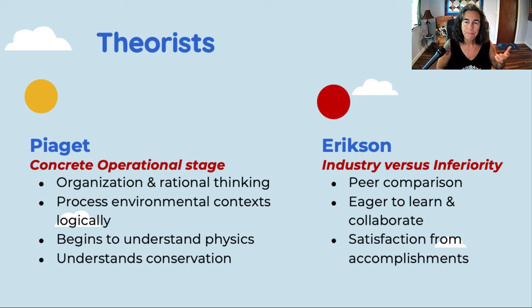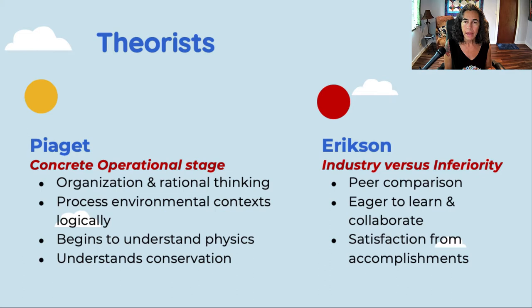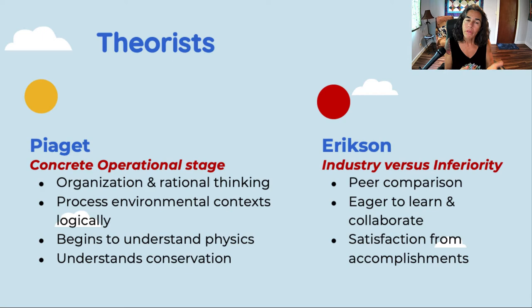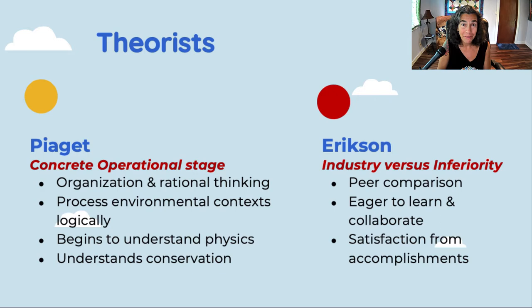Erikson, whom we've visited throughout the lifespan, terms this stage of development industry versus inferiority. Children in this age either decide they can be engaged in occupation and activity in a meaningful and helpful way, or they suffer from feeling inferior to their peers. There's a lot of peer comparison, and this is the age that starts — continuing into adolescence. It's the earliest stage peer comparison typically begins, sometimes in later preschool, but it definitely comes to the fore in middle childhood.